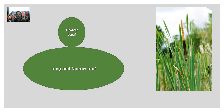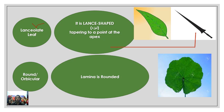Next are the shapes of leaves. The first shape is linear. As you can see, these leaves are long and narrow in shape — straight and elongated.